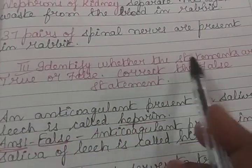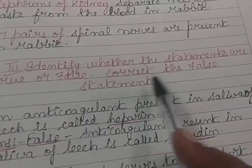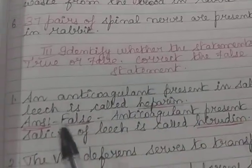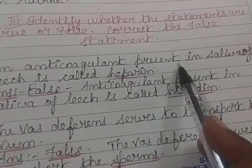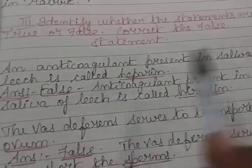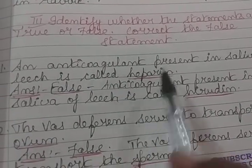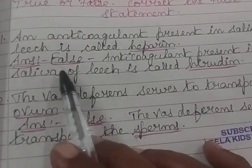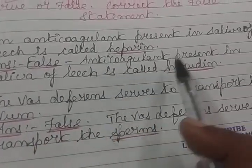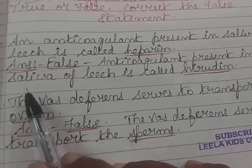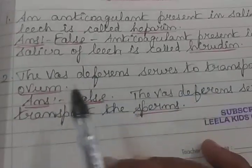Identify whether the statements are true or false and correct the false statement. An anticoagulant present in saliva of leech is called hyparin. Answer: The anticoagulant present in saliva of leech is called hirudin.